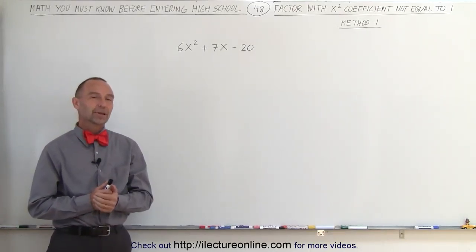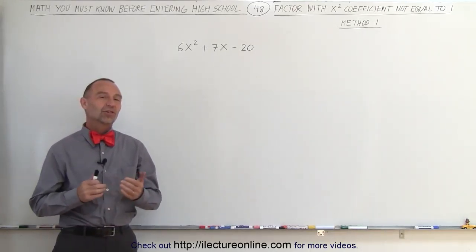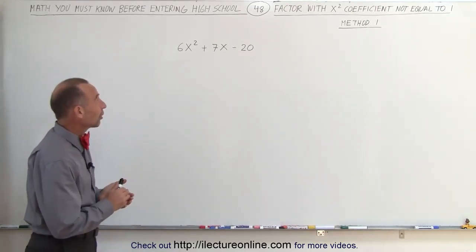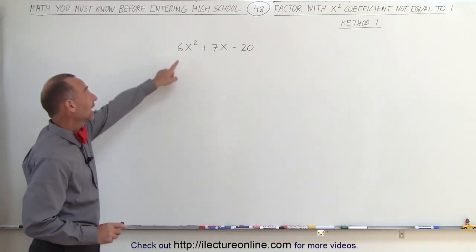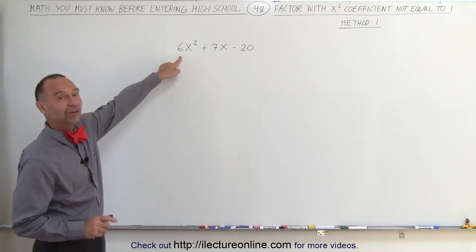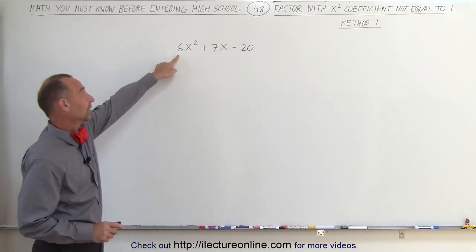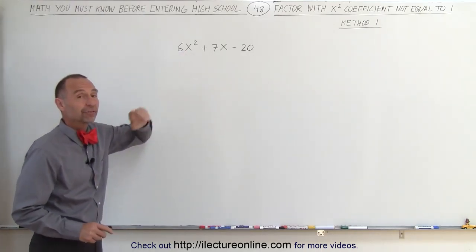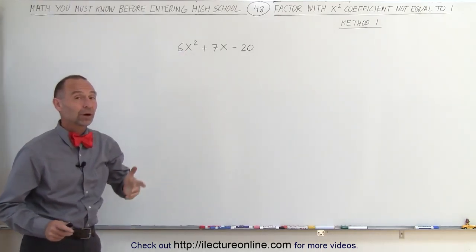Welcome to ElectronLine. The more challenging factoring problems are the ones that don't have a 1 in front of the x-squared term. In this case, the coefficient in front of x-squared is 6. So how do you factor something like that?